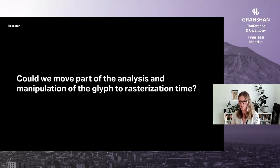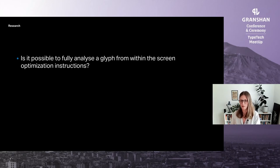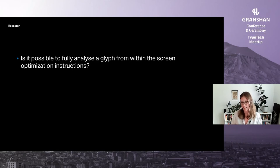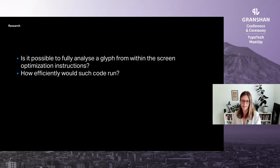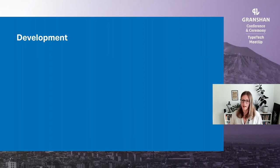This would also be the equivalent of embedding an entire hinting program inside every font file, which left us with two main questions. First: is it possible to fully analyze a glyph from within the screen optimization instructions? TrueType bytecode is a low-level virtual machine language — not a general-purpose instruction set — designed solely for manipulation of geometric point data, lacking many basic features. Second: how efficiently could such code run? Taking more than a few milliseconds for a glyph to appear on screen would be unacceptable. We then developed a small-scale prototype on just a few glyphs, with a glyph analyzer and hinting program handwritten in bytecode assembler using VTT's bytecode compiler for rapid prototyping.